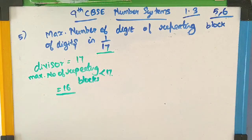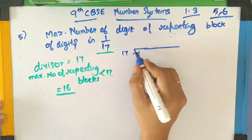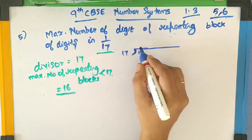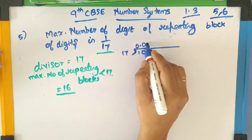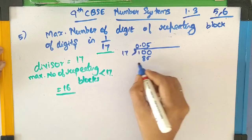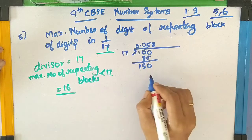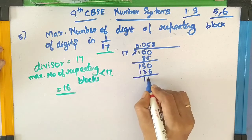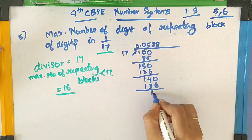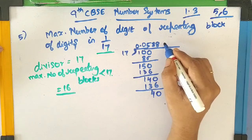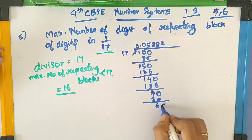Now let's start doing the long division. I am dividing 1 by 17. As 1 cannot be divided by 17, I am adding a point in the quotient area and a 0. 10 is not divisible by 17, so I am adding 0 to both areas. Now 5 17s are 85. The remainder is 15. I am adding a 0. Now 8 17s are 136, the remainder is 14. Adding a 0, again 8 17s are 136, remainder is 4. Adding a 0, now 2 17s are 34. The remainder is 6. I am adding a 0.